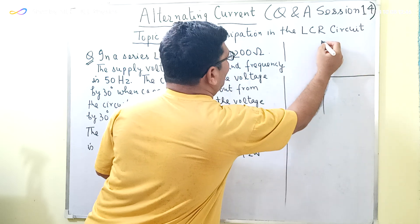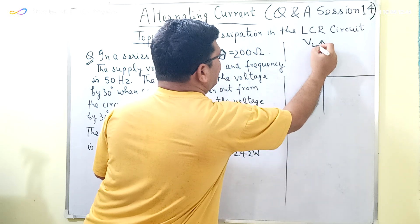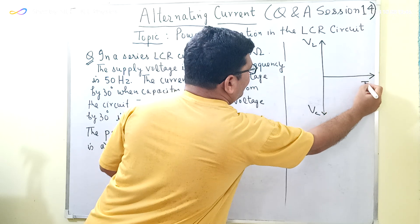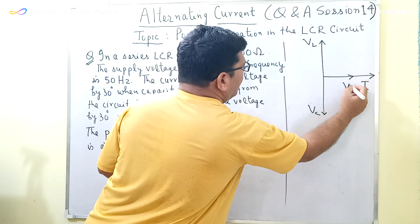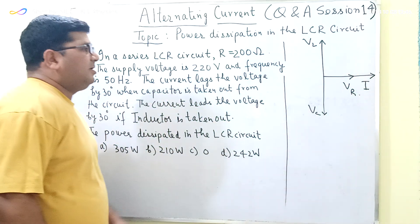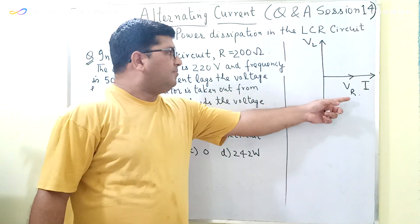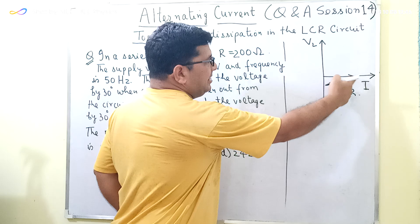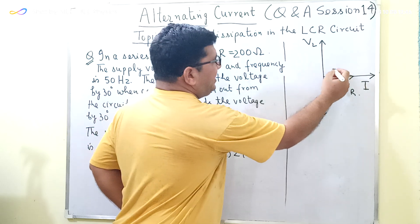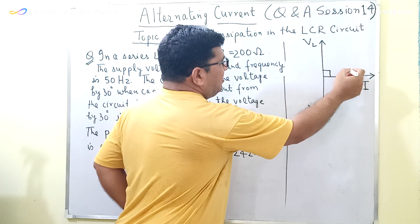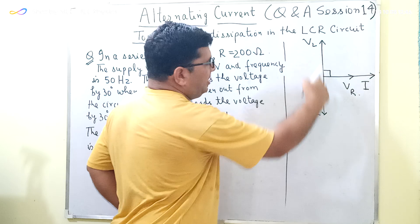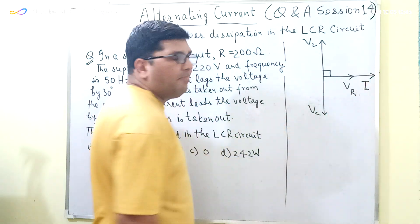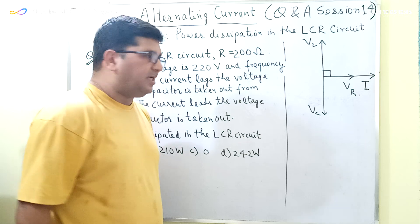Here I am drawing one phasor diagram of the LCR circuit. In the LCR circuit, the voltage across the inductor leads the current by 90 degrees, and the voltage across the capacitor lags the current by 90 degrees.